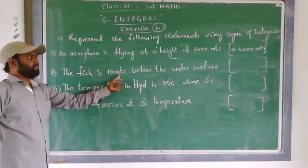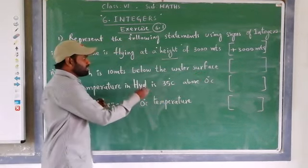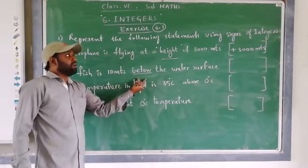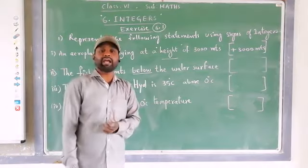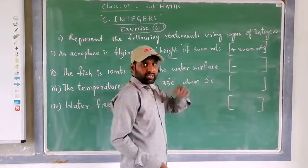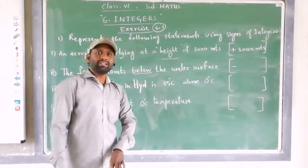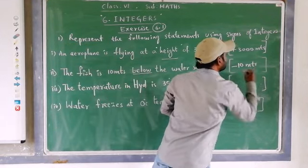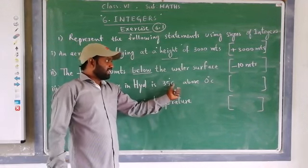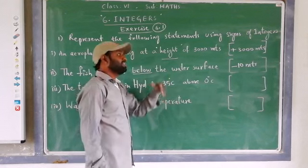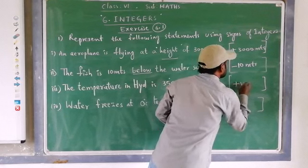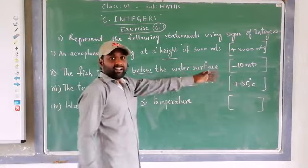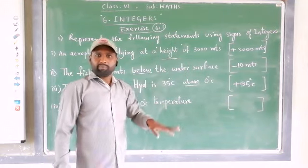Second statement: the fish is 10 meters below the water surface. The keyword is 'below.' Below the water surface means under the water. Below means negative sign. So the answer is minus 10 meters. Third: the temperature in Hyderabad is 35 degrees Celsius above 0 degrees Celsius. Above means positive. So the answer is plus 35 degrees Celsius. Remember: above means positive, below means negative.